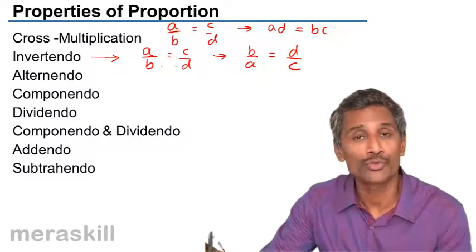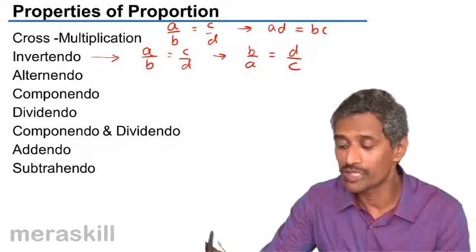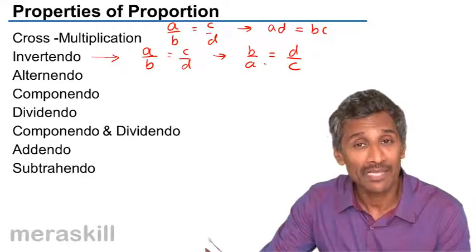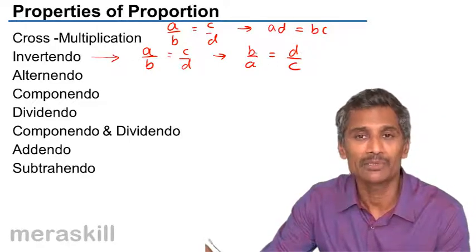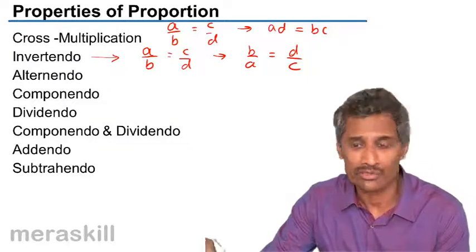In other words, whatever the ratio relation between two ratios, if they are equal, their inverse ratios are also equal. Simple example: suppose 2 by 3 is equal to 4 by 6, then 3 by 2 is also equal to 6 by 4.